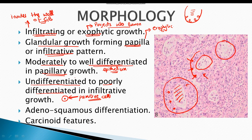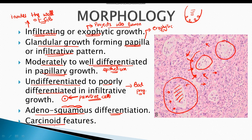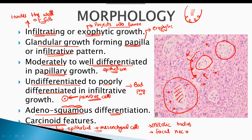Adenocarcinoma with papillary or exophytic growth has a good prognosis, whereas infiltrative growth with undifferentiated to poorly differentiated cells has a bad prognosis. Between the cells and the glands, there is also fibrosis present. In about 5% of tumors, there is adenosquamous differentiation, meaning both glandular epithelial cells and squamous cells are present. Certain tumors also reveal carcinoid features, meaning they have both epithelial and mesenchymal tumor cells. Malignant tumors show excessive mitotic bodies and areas of focal necrosis.